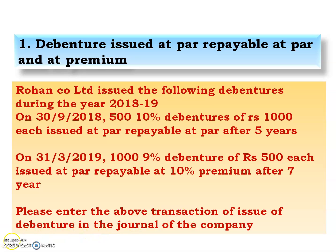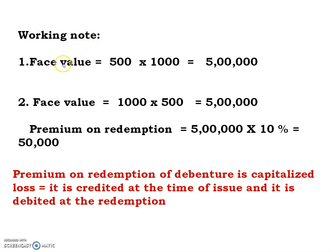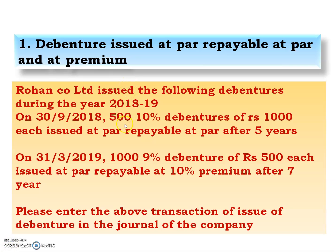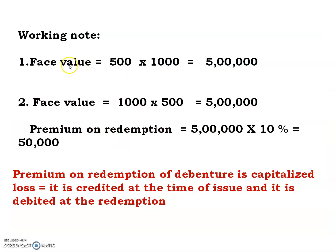First, we calculate the face value as Working Note 1. The number of debentures is 500, and the value of one debenture is rupees 1000. So 500 multiplied by 1000 gives us a face value of rupees 5 lakh. This is the face value for the first case.